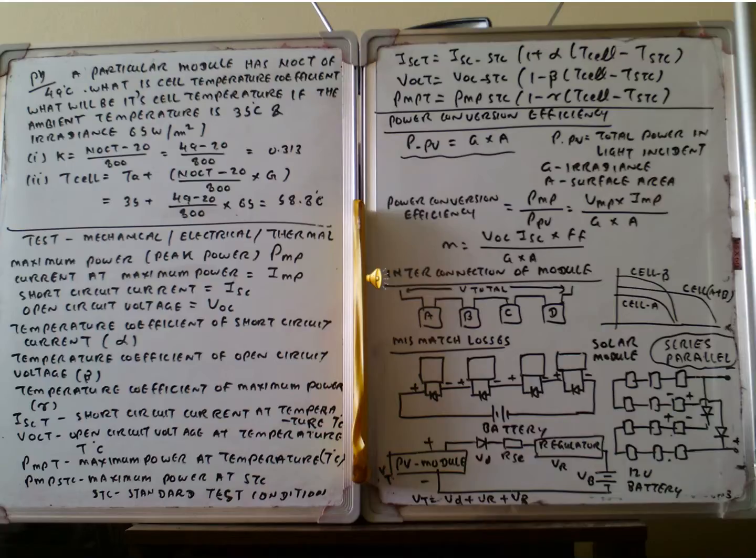A particular module has a NOCT. The denominator operates at the cell temperature of 49 degree centigrade. What is the cell temperature? This is the cell temperature. If the ambient temperature is 35 degree centigrade, then the irradiance is 850 watt per meter square.